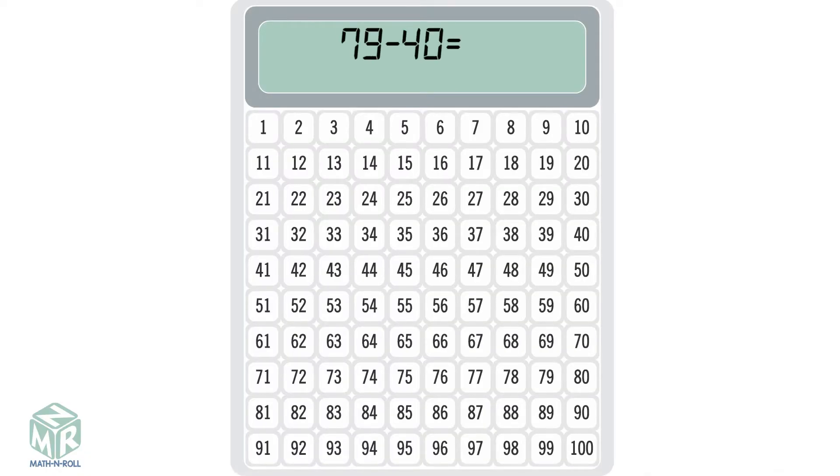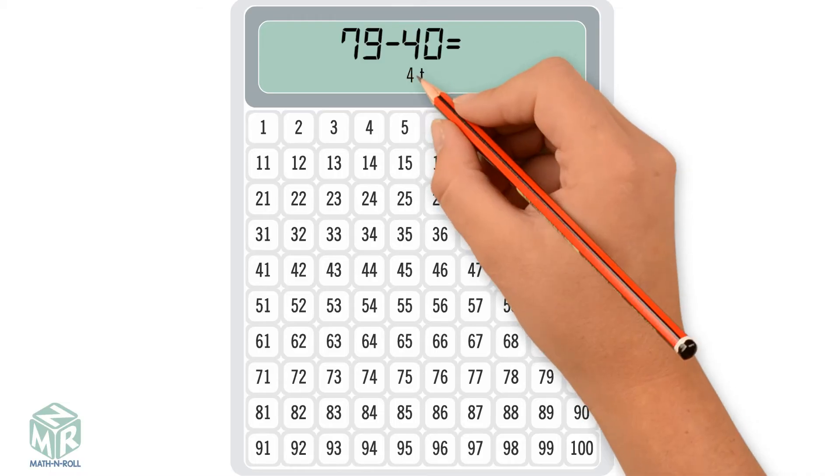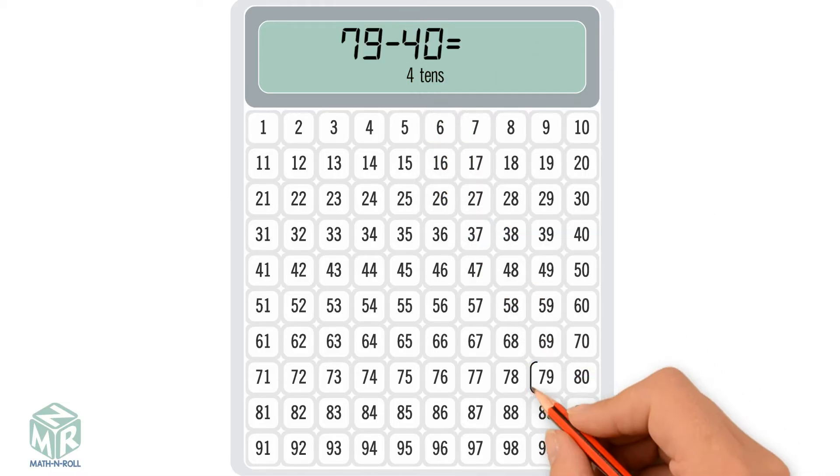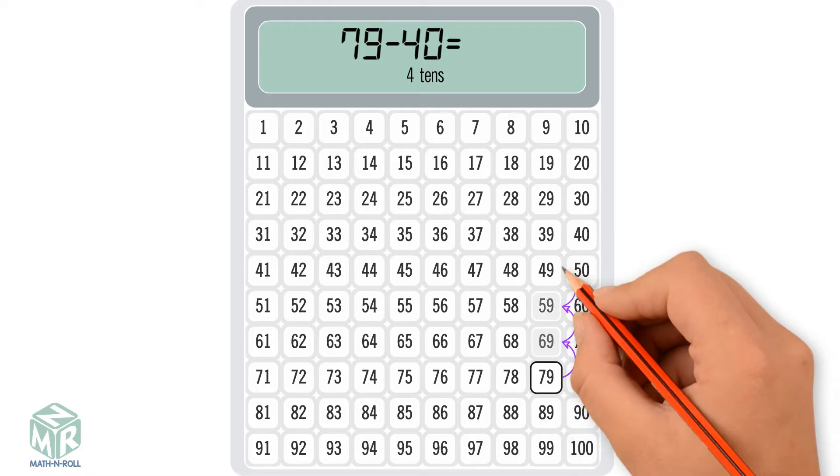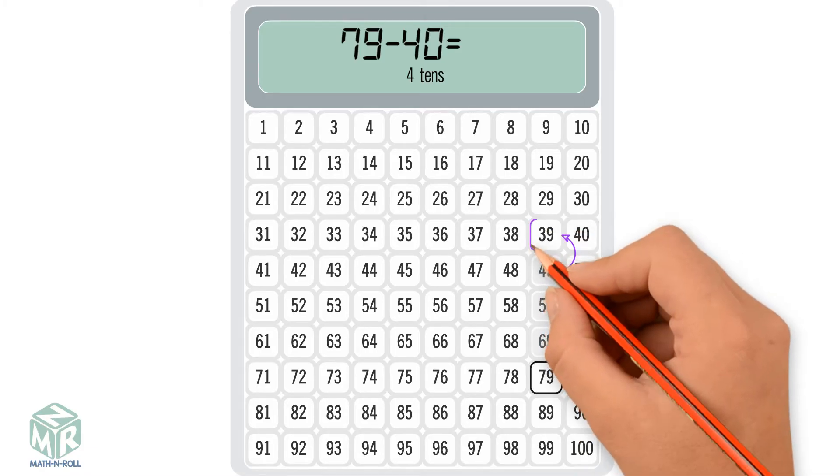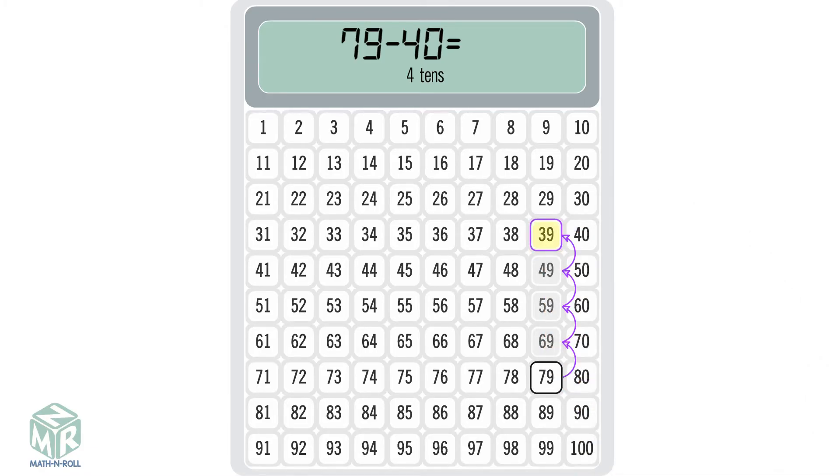79 minus 40. 40 is 4 tens. Start at 79 and move up, or subtract 4 tens. We get 39, so 79 minus 40 equals 39.